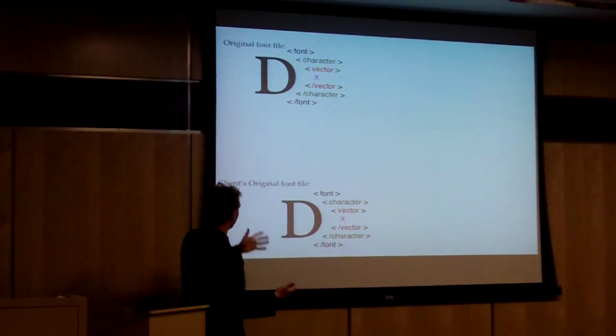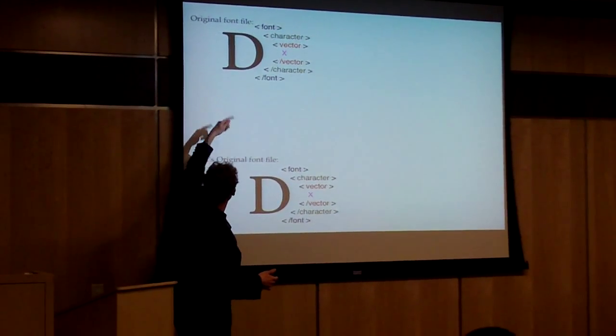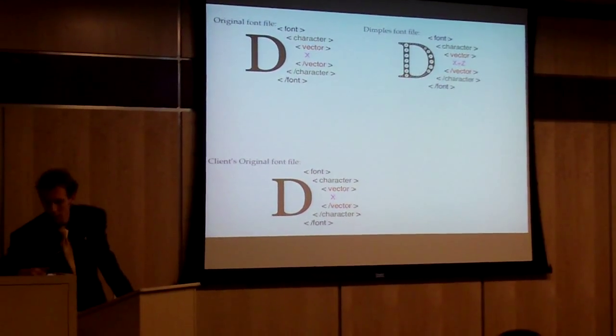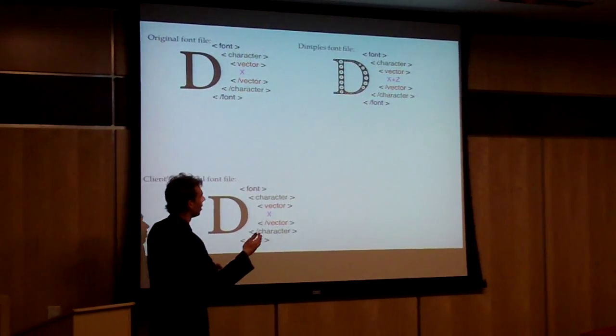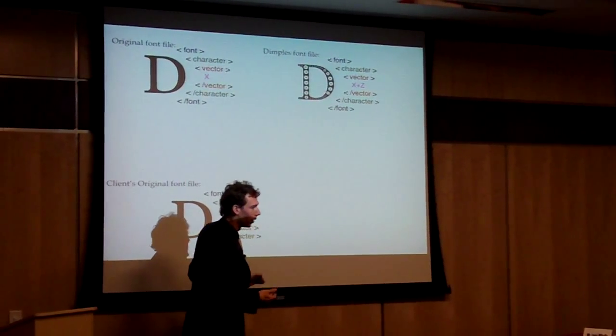The left side here, this being is the Georgia font. It's owned by Microsoft. It's duplicate here. And what Dimples is doing is we're writing digital preparations. This is the derivative of a copyrighted work, so it's still owned by Microsoft.